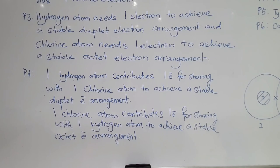Point five: a covalent compound with a single covalent bond is formed, and the chemical formula of hydrogen chloride molecule is HCl.